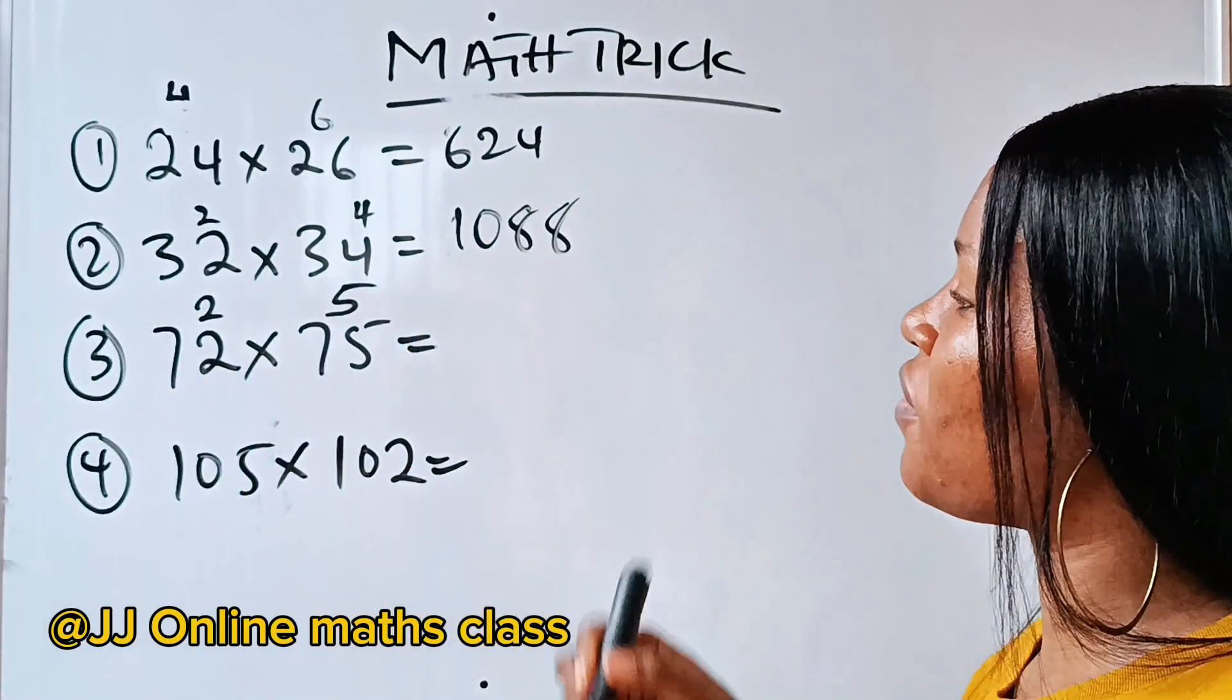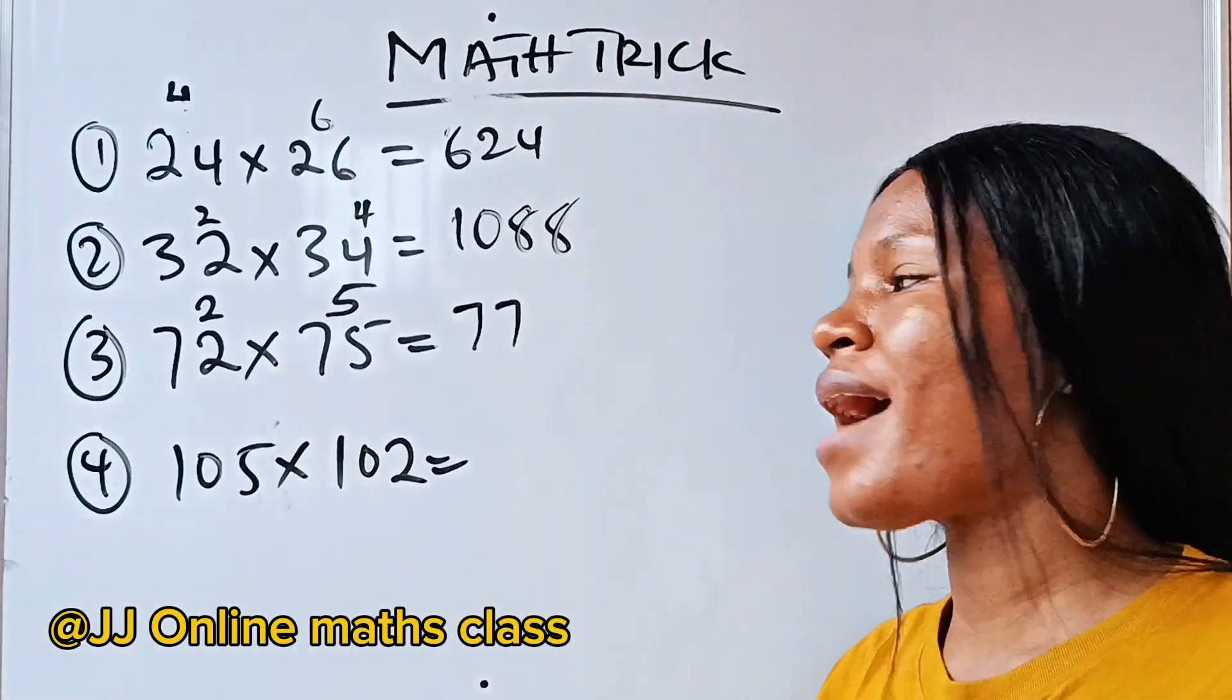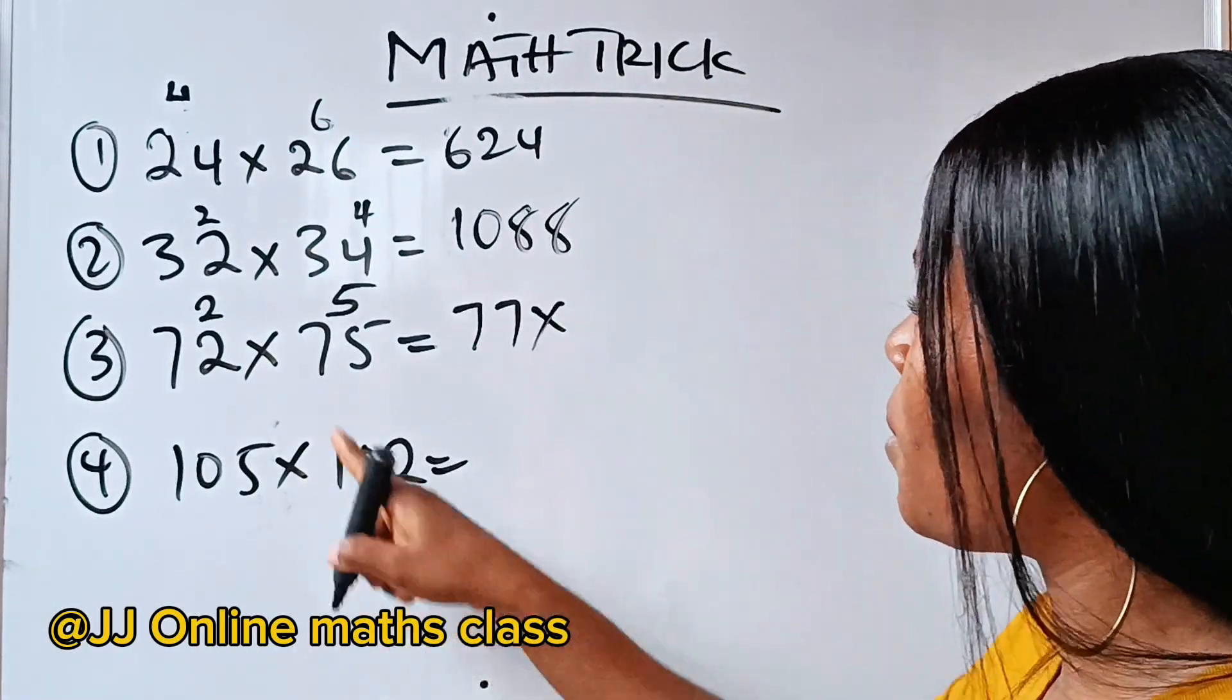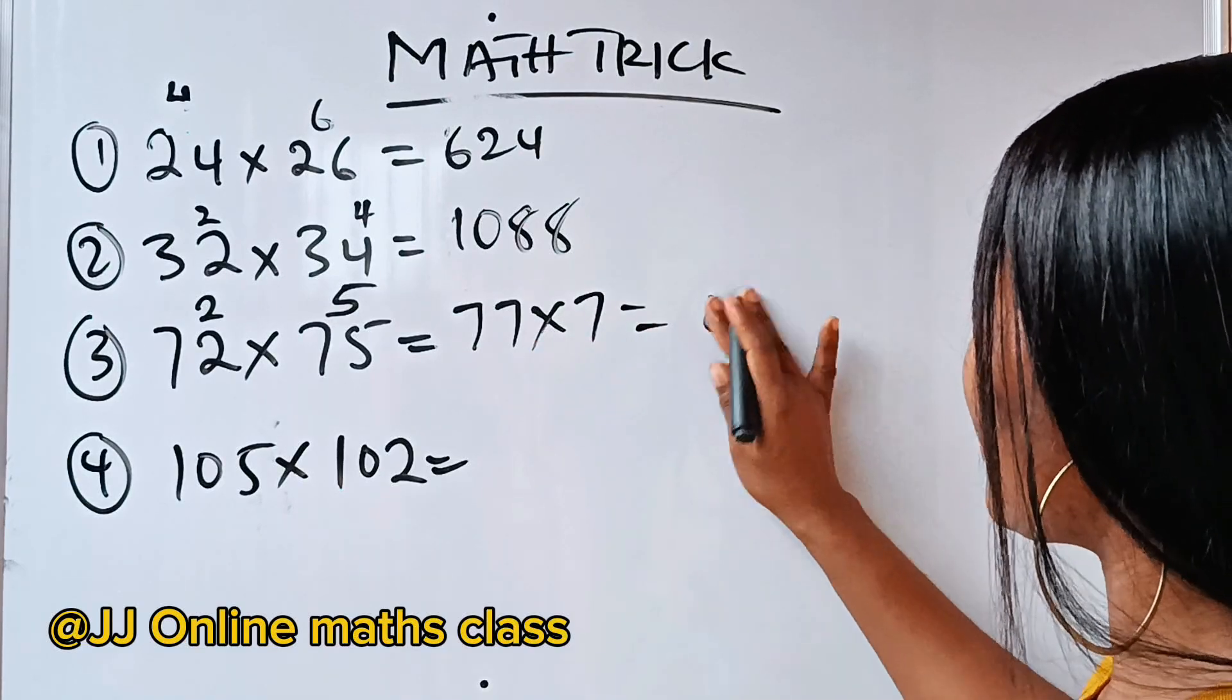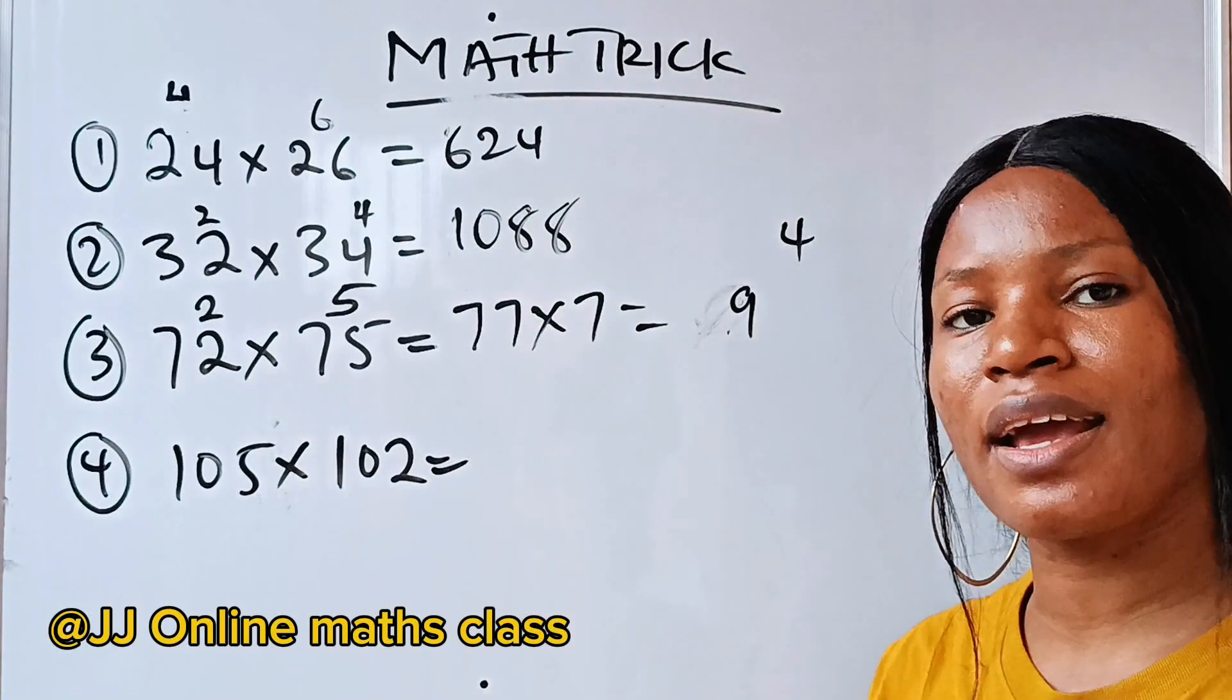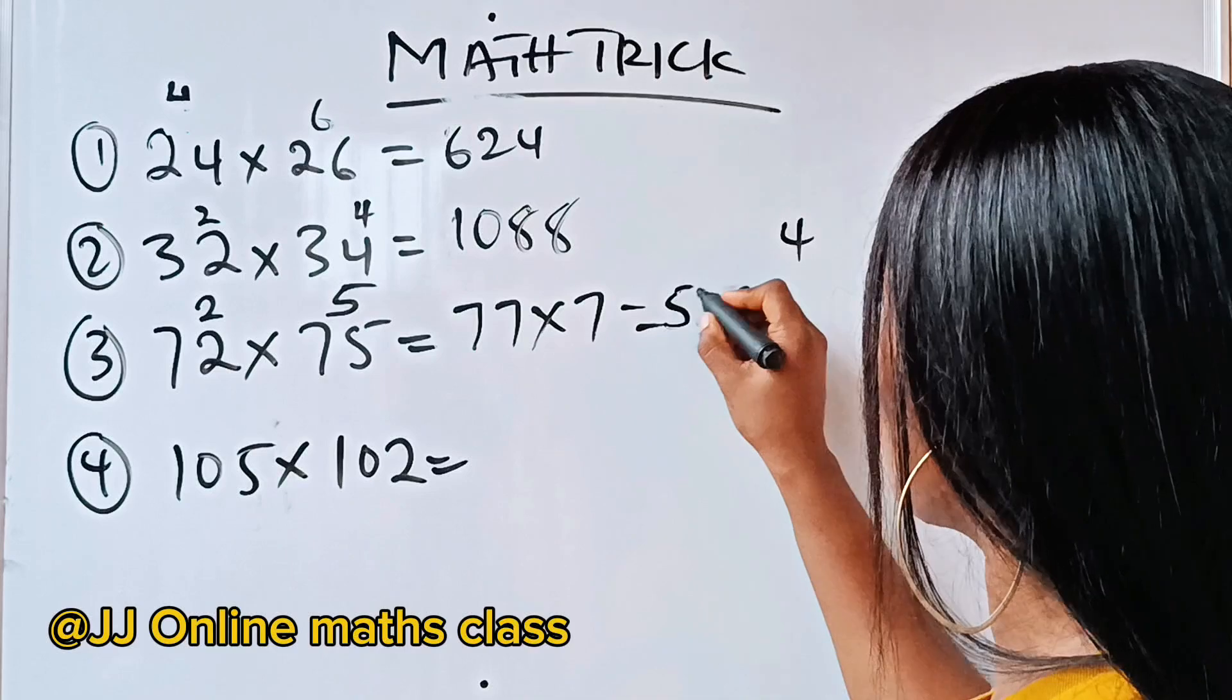72 plus 5 will give us 77. Now, we are going to multiply this 7 by 7. So, 7 times 7 is 49, 9 carry 4. 7 times 7 is 49 again, plus 4 will give us 53. So, we have 53.